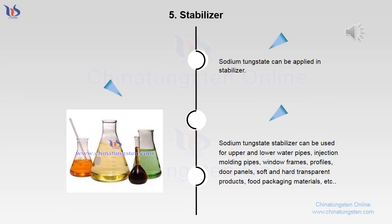Stabilizer: Sodium tungstate can be applied as a stabilizer. Sodium tungstate stabilizer can be used for upper and lower water pipes, injection molding pipes, window frames, profiles, door panels, soft and hard transparent products, food packaging materials, etc.